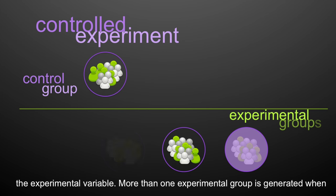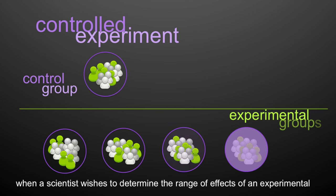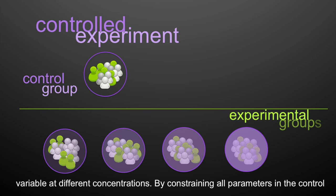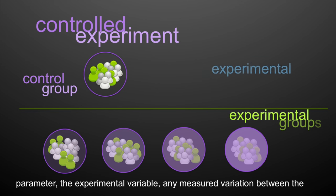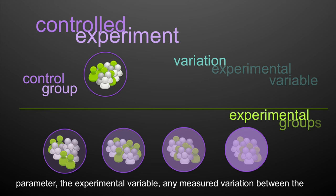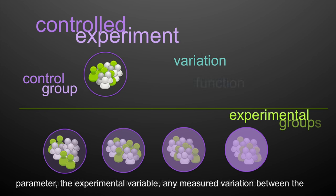More than one experimental group is generated when a scientist wishes to determine the range of effects of an experimental variable at different concentrations. By constraining all parameters in the control and experimental groups but only changing the experimental variable, any measured variation between the groups can be inferred to be a function of the experimental variable.